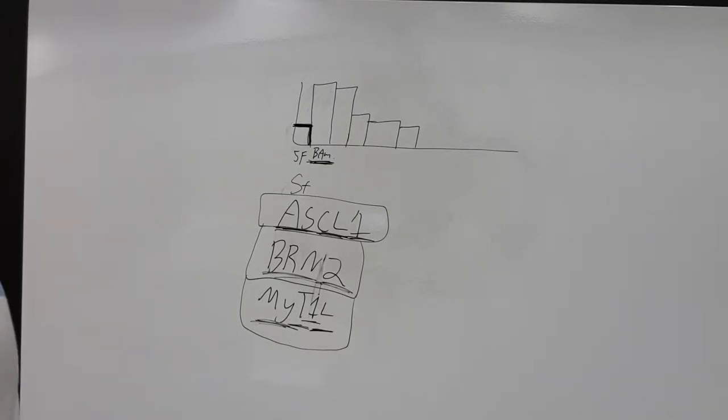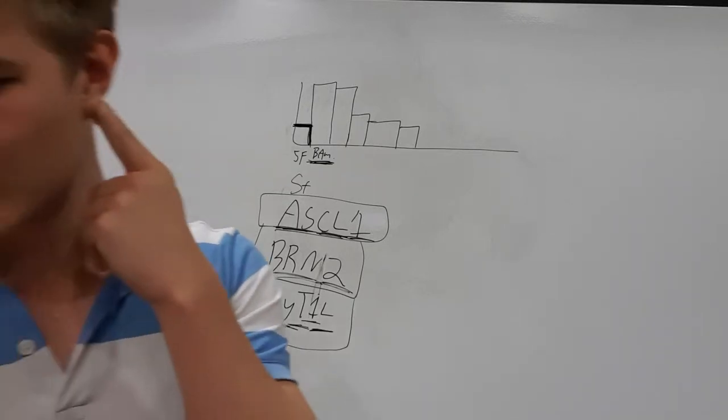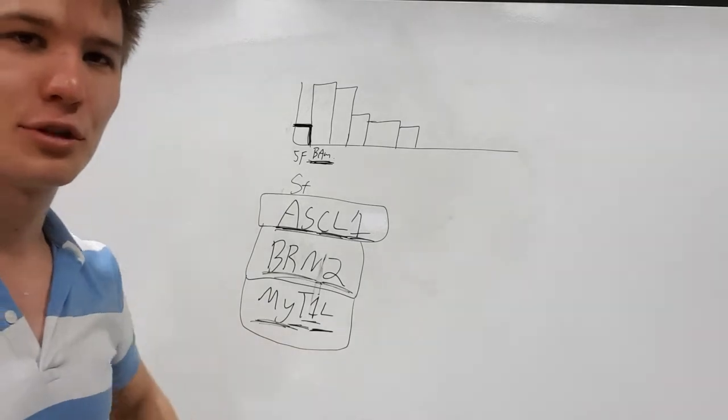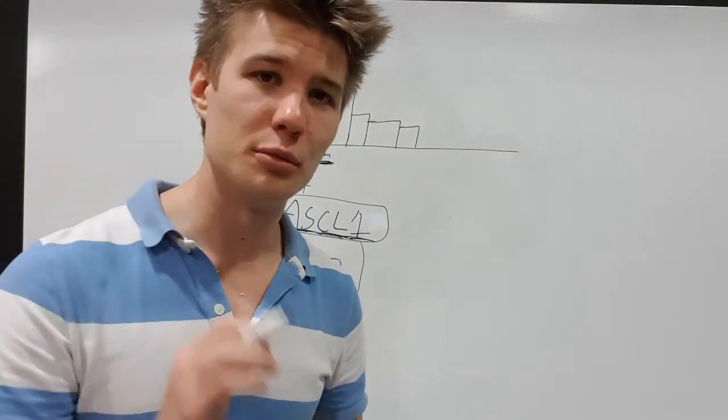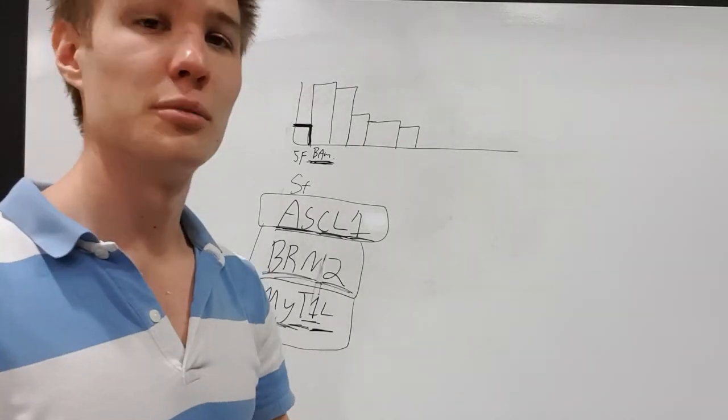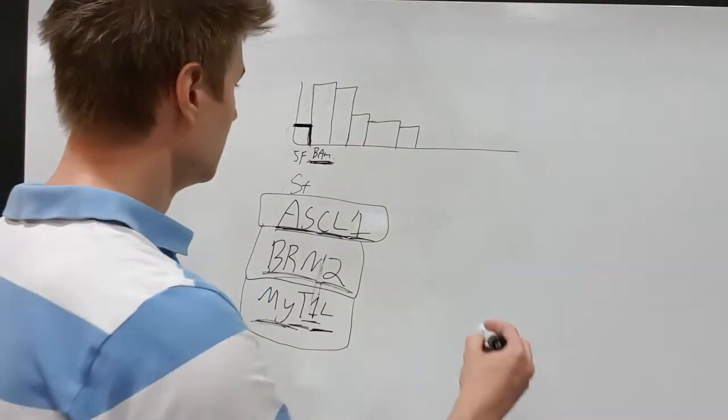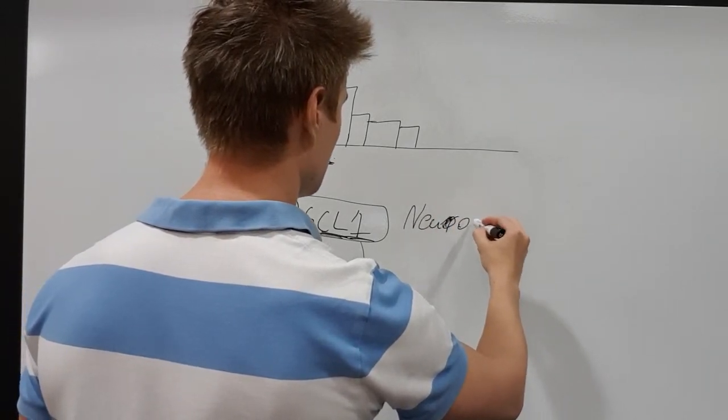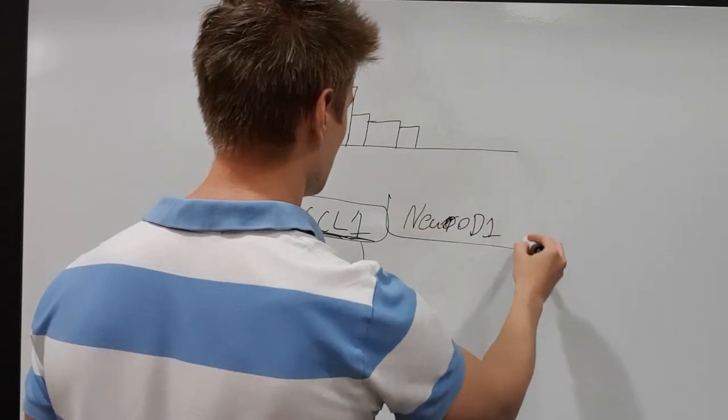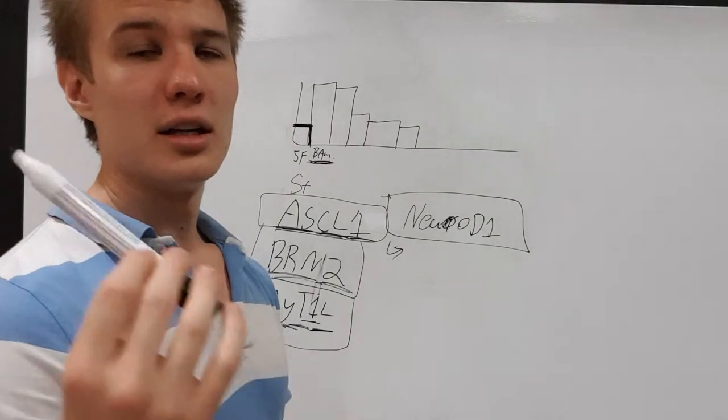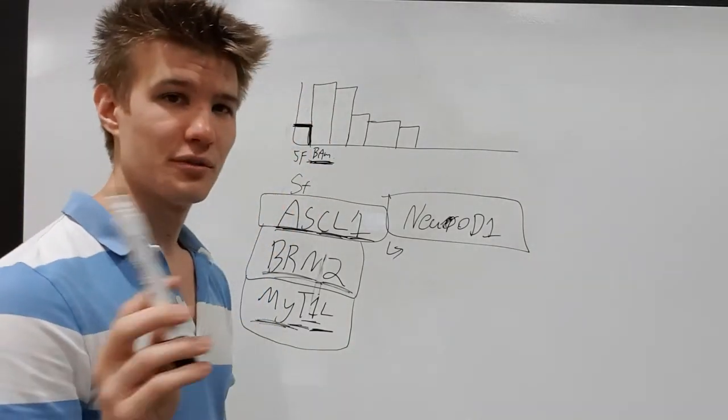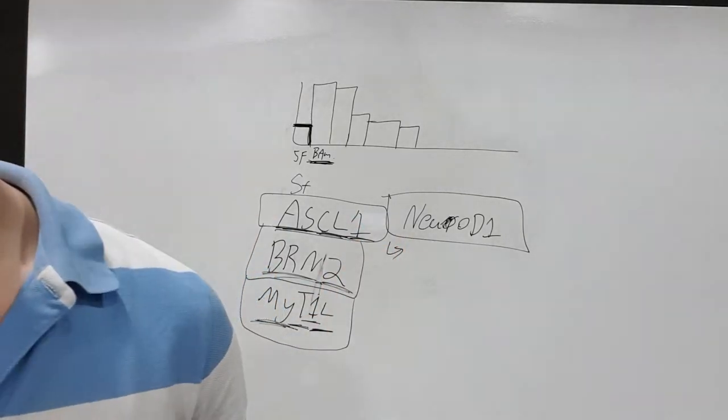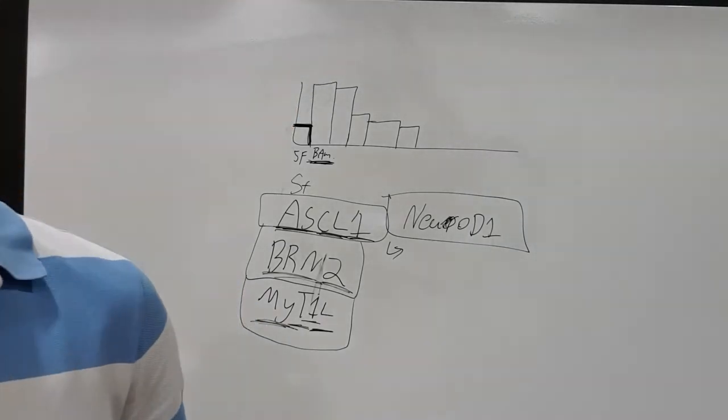Now, interestingly, this experiment was performed on mice and it was still effective using much the same transcription factors as on humans. So we did the same experiment essentially and we did it on humans and we got a good result, which is interesting. We also used neuroD1, and neuroD1 is responsible for neurogenesis. So it's a functional transcription factor in the neurons, which is responsible for the genesis of the neurons. So that makes sense and it increases your efficiency quite substantially.